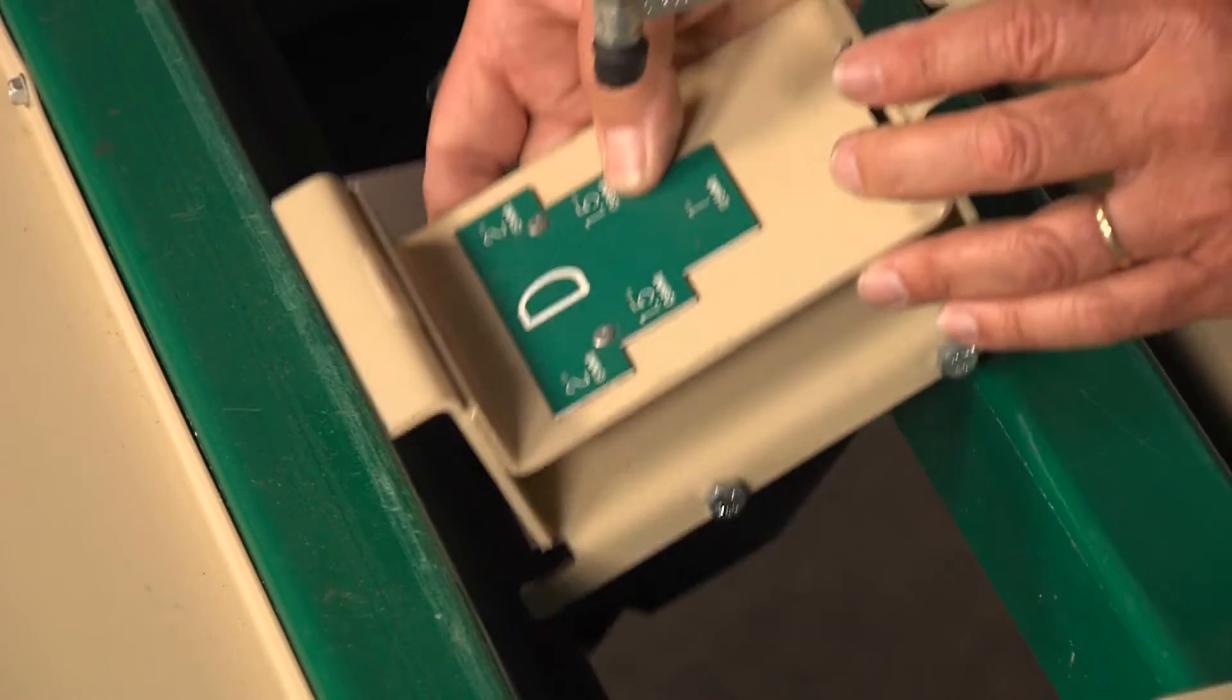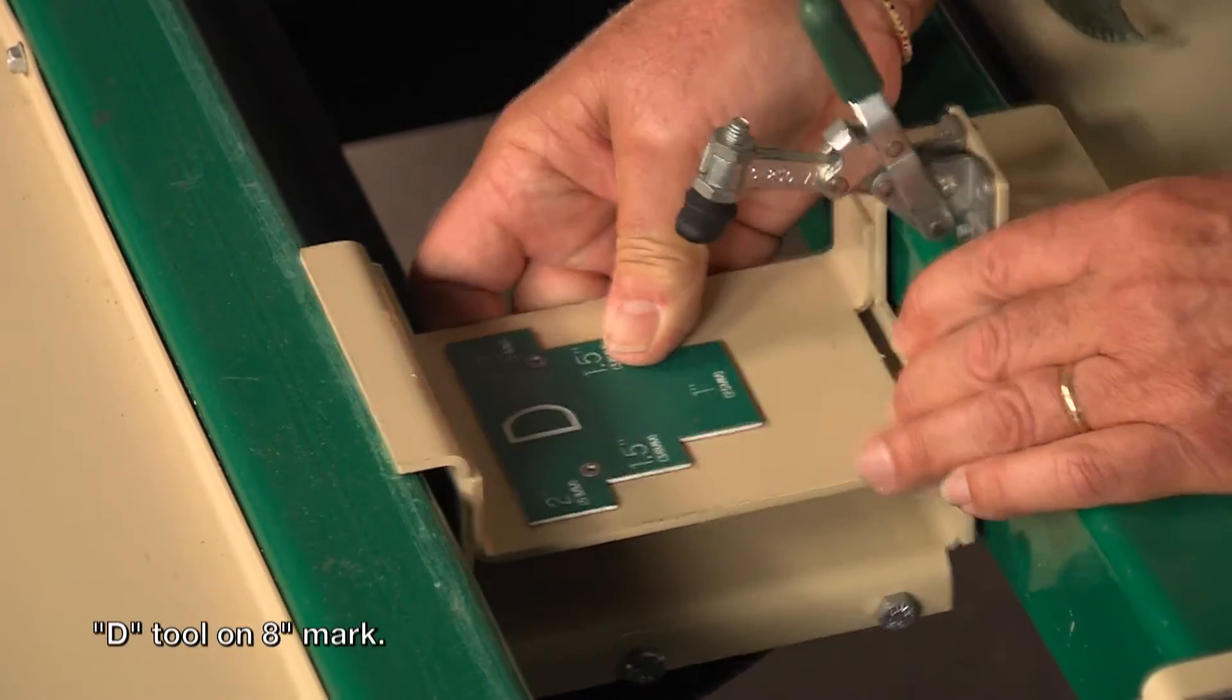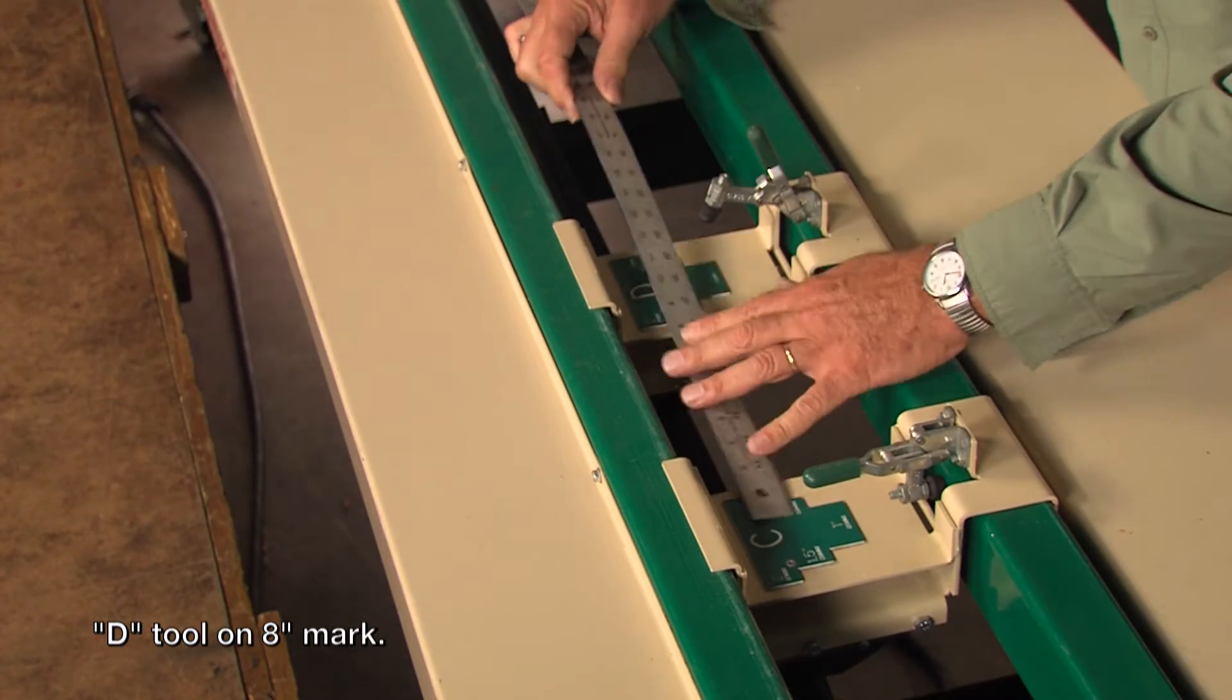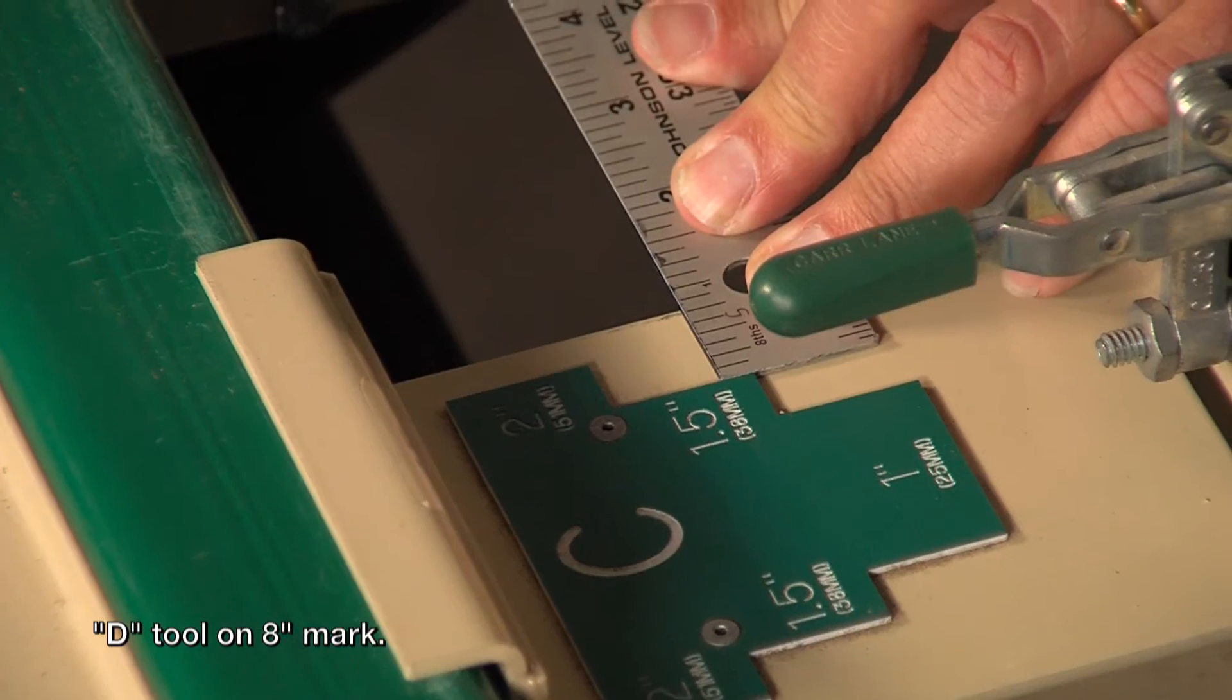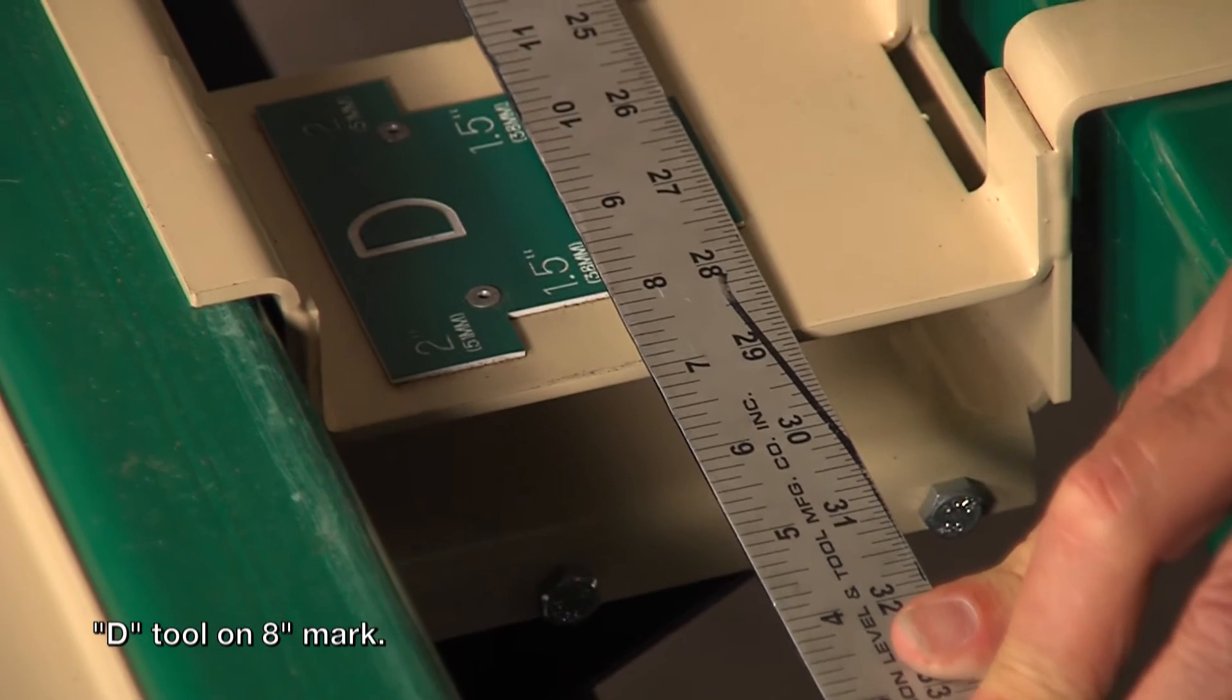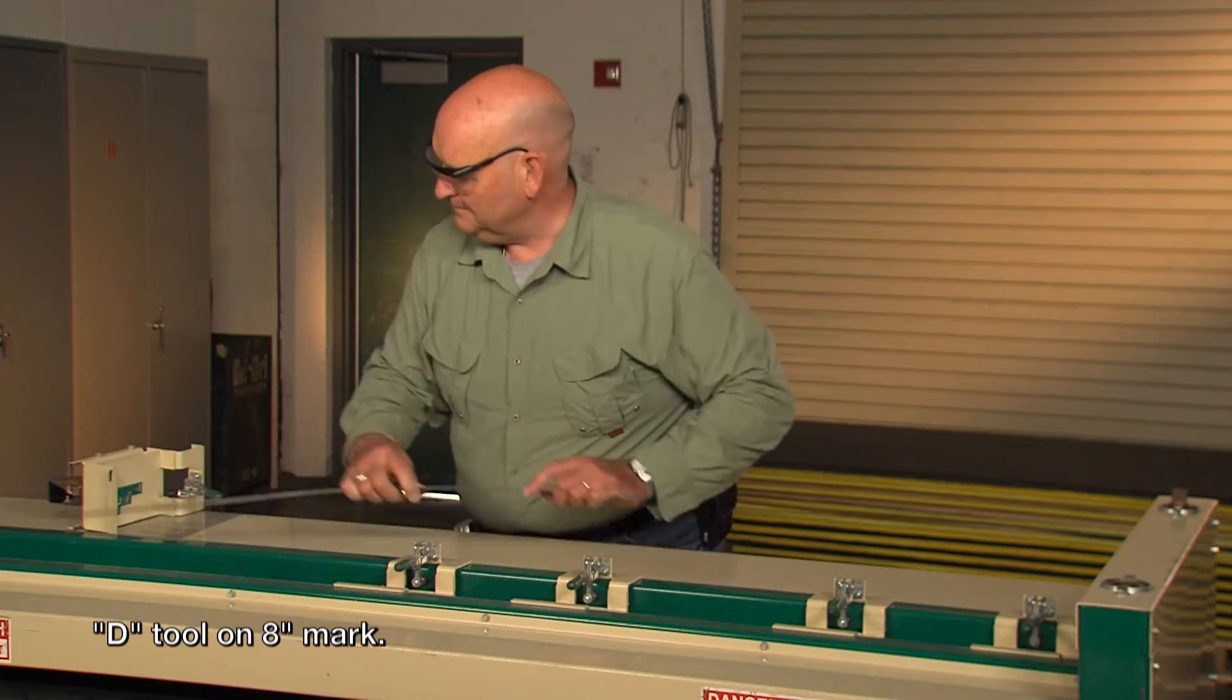Place the D tool on the toolbar and follow the same procedure. Measure from the right side of C to the left side of D one and a half inch tab, this time using eight inches again.